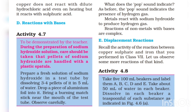During the preparation of sodium hydroxide solution, care should be taken that pellets of sodium hydroxide are handled with a plastic spatula — this is the precaution given. Prepare a fresh solution of sodium hydroxide in a test tube by dissolving 3 to 4 pellets in 5 ml of water. Drop a piece of aluminium foil into it, then bring a burning matchstick near the mouth of the test tube and observe carefully.